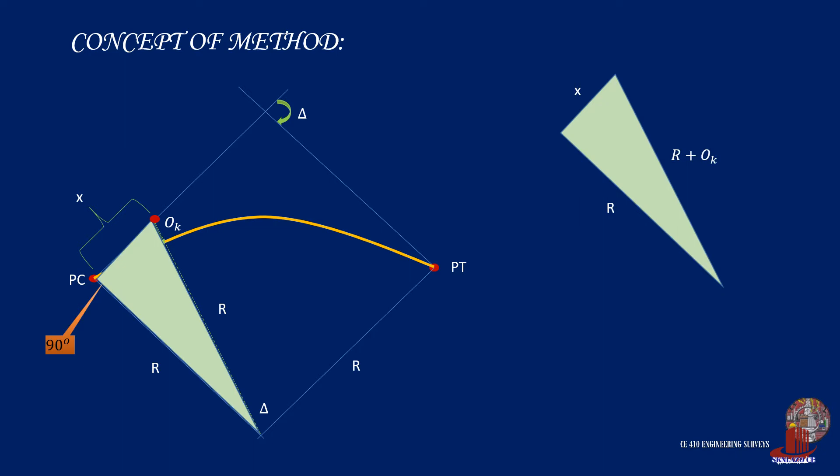Its sides are x and r and the hypotenuse is O sub k with r. Thus, we have already generated the length of radial offsets at this point. By using Pythagorean theorem, we come up with r plus O sub k squared is equal to r squared plus x squared. So by taking the root of both terms, we get r plus O sub k is equal to the root of the quantity r squared plus x squared.